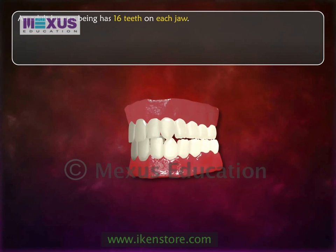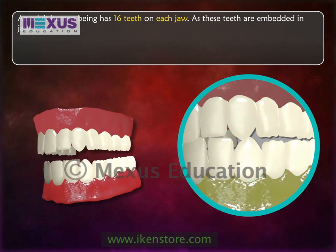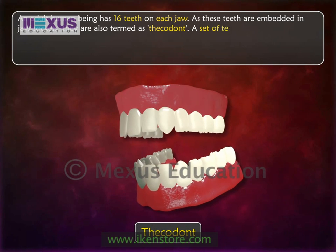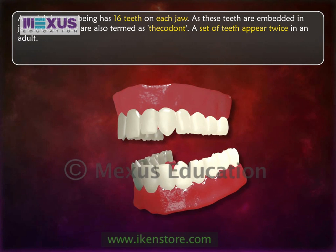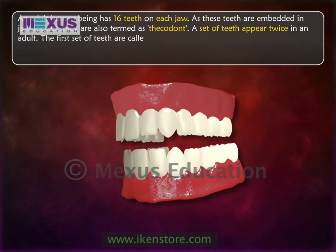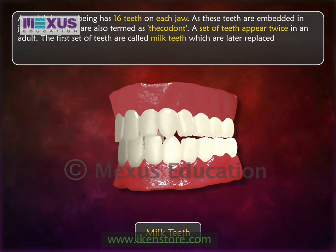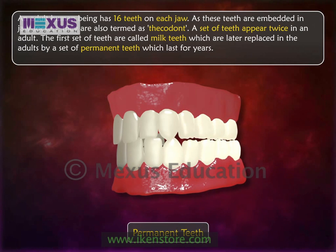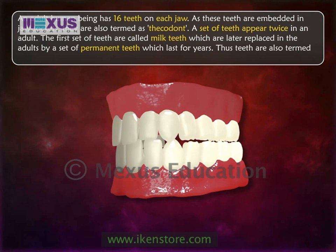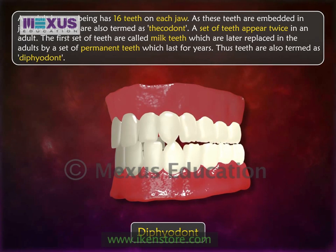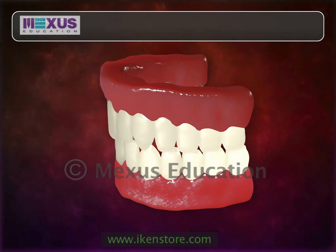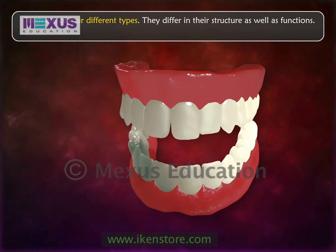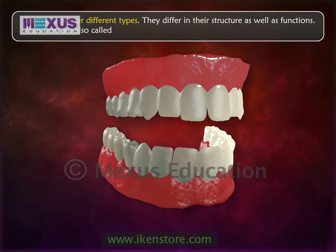An adult human being has 16 teeth on each jaw. Since these teeth are embedded in jaw sockets, they are termed thecodont. A set of teeth appears twice in a lifetime: the first set, called milk teeth, is later replaced in adults by permanent teeth, so teeth are also termed diphyodont. Teeth are of four different types and differ in structure as well as function, so they are also called heterodont.